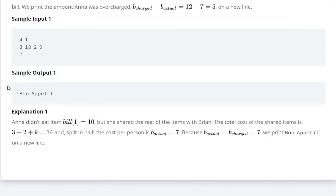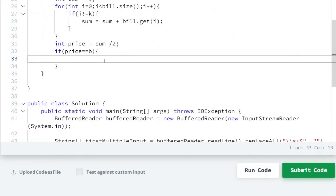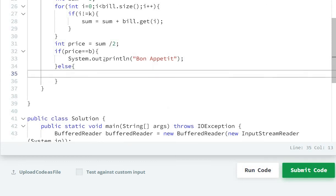I have to print System.out.println Bon Appetit. Else what will I do? The actual price minus the overcharged price: println b minus price.